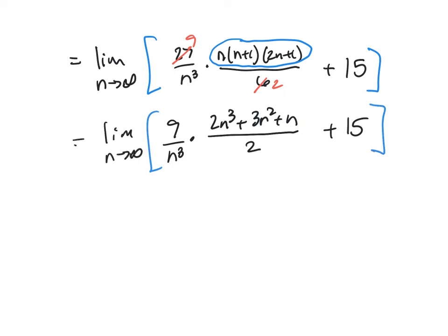Okay, so we're getting close. Take a look at this. I'm going to distribute the 9. So multiply that to all these terms. And I'll multiply the N cubed along here on the bottom. And that gives me 18N cubed plus 27N squared plus 9N over 2N cubed.